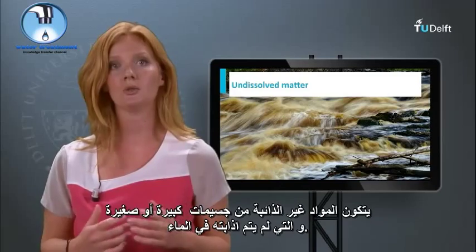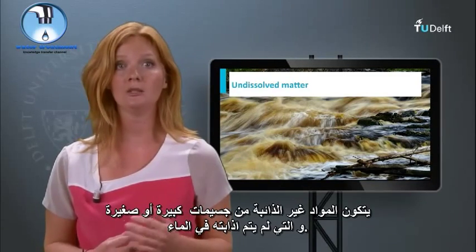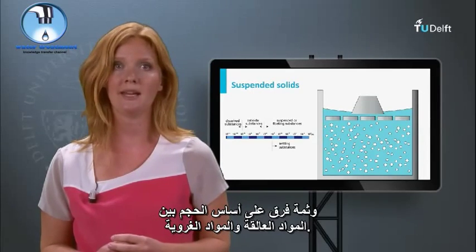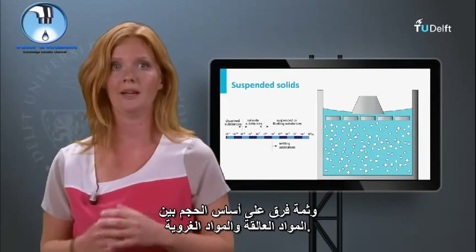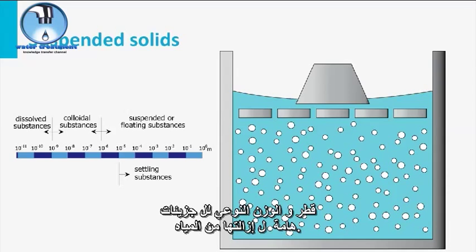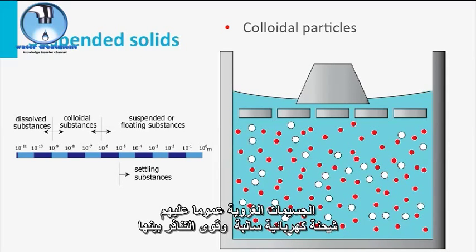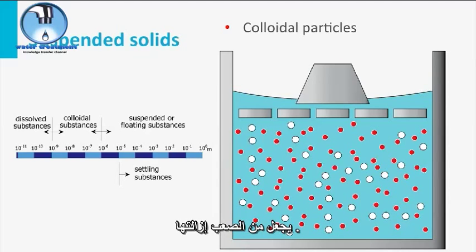Undissolved matter consists of large or small particles which have not been dissolved in the water. A distinction based on size is made between suspended and colloidal matter. The diameter and specific gravity of particles are important for removing them from the water. Colloidal particles are smaller and have a specific gravity similar to the water. Colloidal particles generally have a negative electric charge, and their electrostatic repulsion makes them difficult to remove.